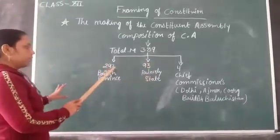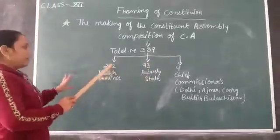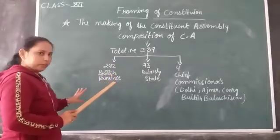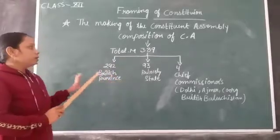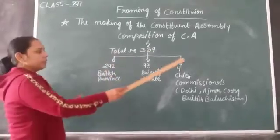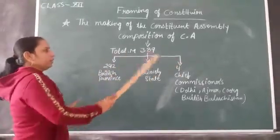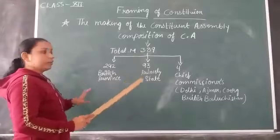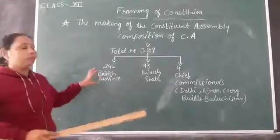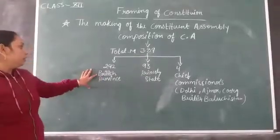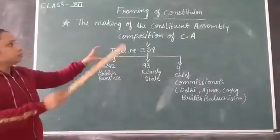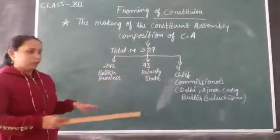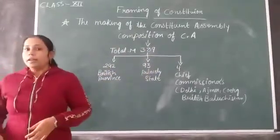So to summarize: 292 were from British provinces, 93 were from the princely states, and 4 were from the chief commissioners' areas. This is how the division of the 389 members of the Constituent Assembly was structured.